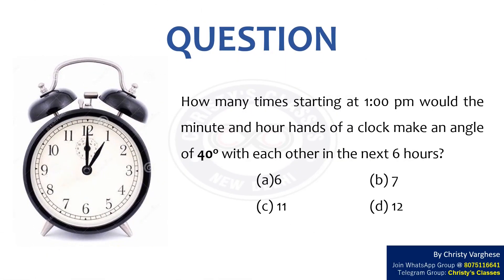In this video, let us discuss a question on angles. How many times, starting at 1 pm, would the minute and hour hands of a clock make an angle of 40 degrees with each other in the next 6 hours? Options: A) 6, B) 7, C) 11, and D) 12.